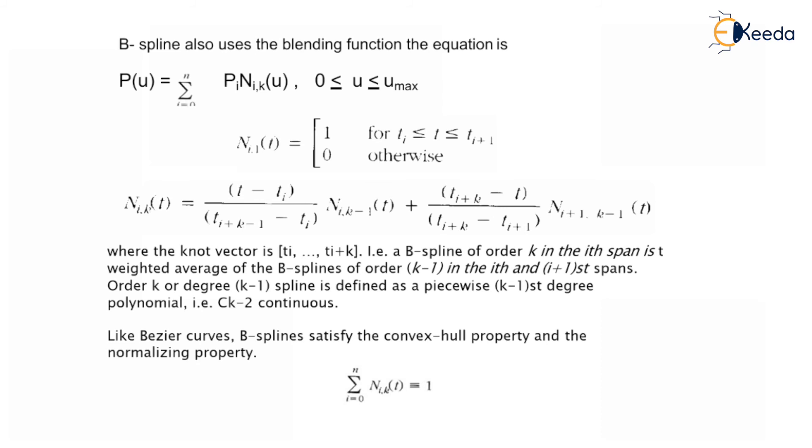Like Bezier curve, B-splines satisfy the convex hull property and normalizing property. So remember this, if it is a convex hull and normal property, so summation Ni,k(t) equals 1.